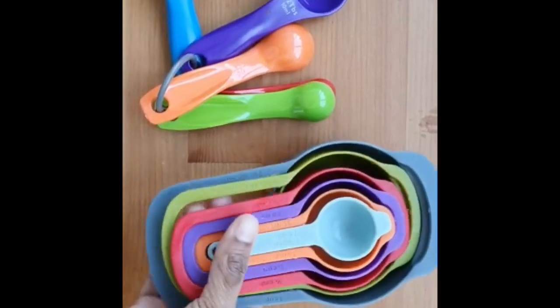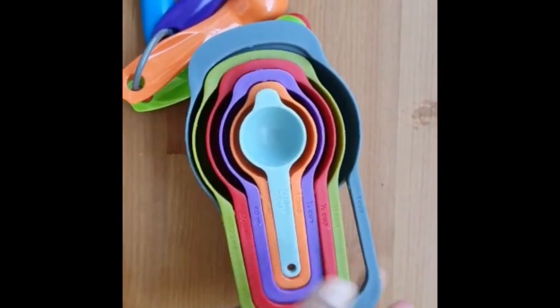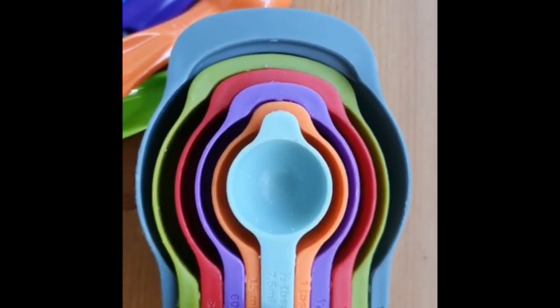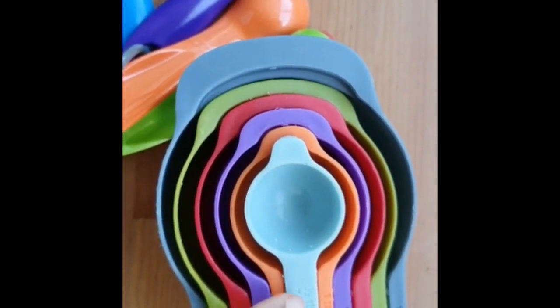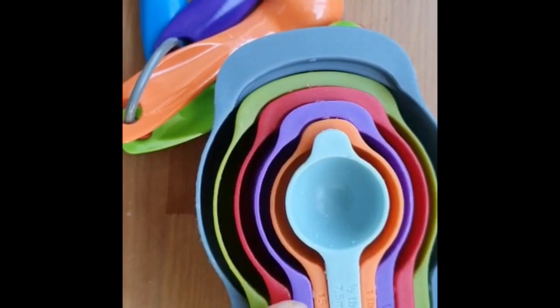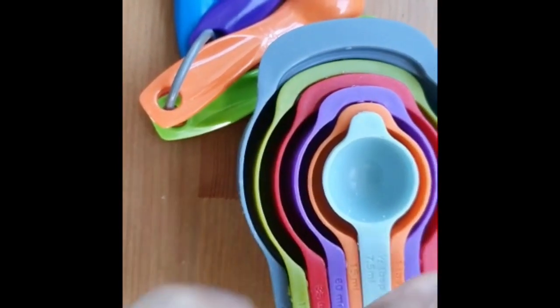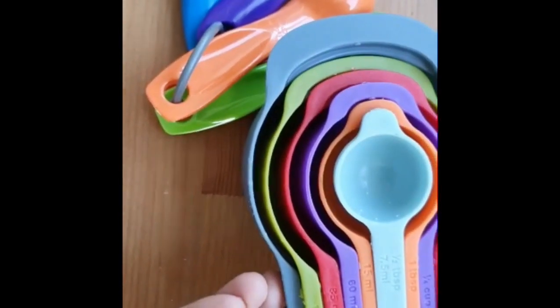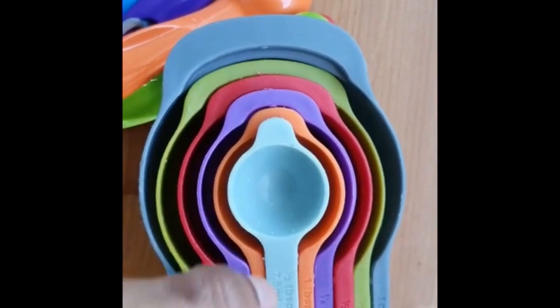Next thing is the measuring cups. In this measuring cups we will be getting all the measurements like you can see: one cup, half cup, one by third, one by fourth, one tablespoon, half tablespoon, 15 ml. So these are all the cup measurements in the ml also. See, 250 ml is one cup and 125 ml is half cup, you can see right?